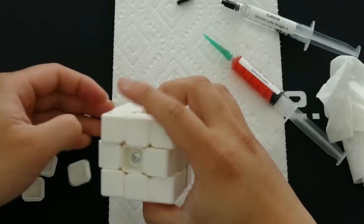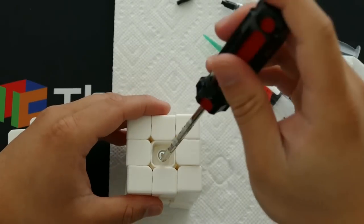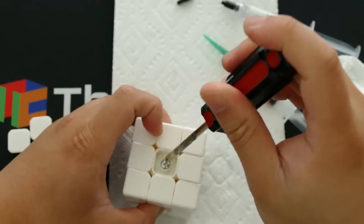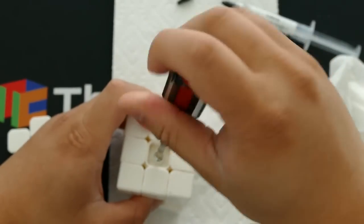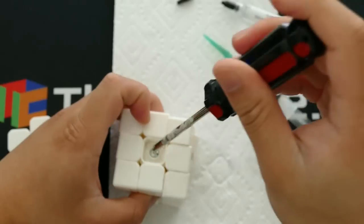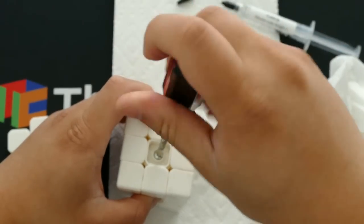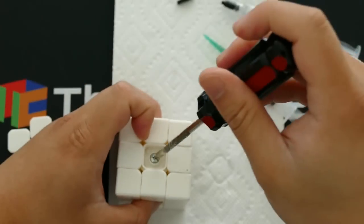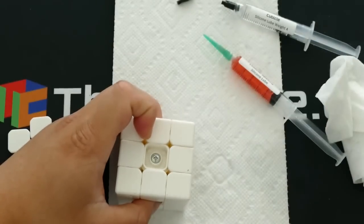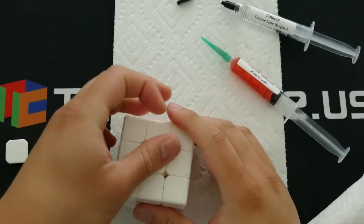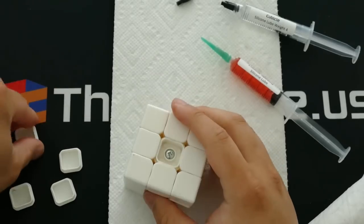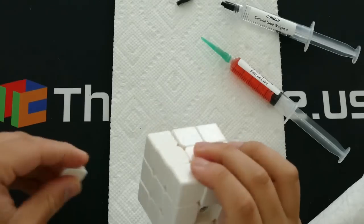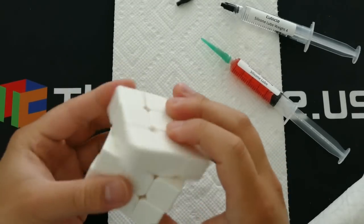So what we'll do now is after applying the Lubicle Speedy, you just play with the cube a lot to disperse the lube so that it coats the pieces. And I'm just going to do a little bit of tightening to make sure that the cube has even tensions and tensions workable enough so that they don't pop. So what I'll be doing now is I'll be letting the sound in in a bit so you can just hear how much better the cube has gotten. I didn't have sound previously but you can just hear now how crisp the cube is and how fast it rotates.